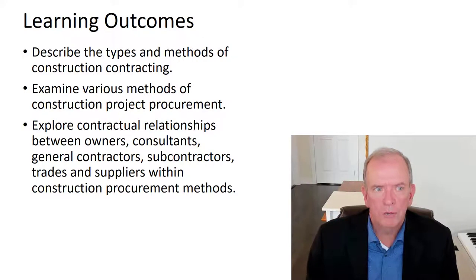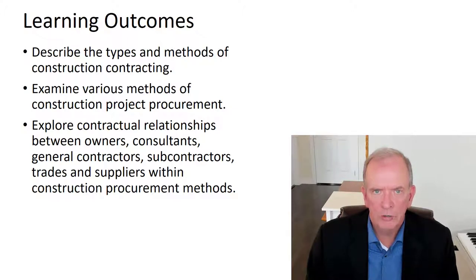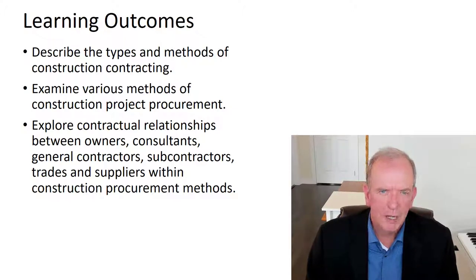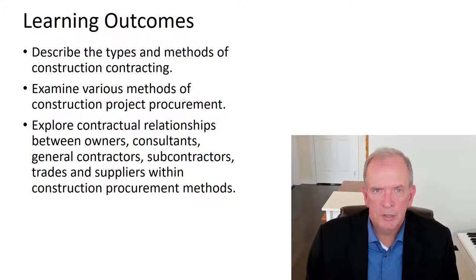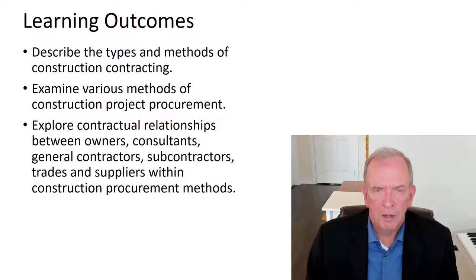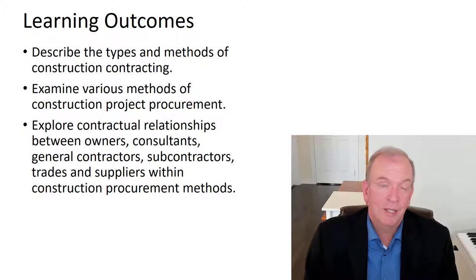Our learning outcomes for today — this lecture is broken up into two parts, 3A and 3B. We're going to be looking at the types and methods of construction contracting, how we go about procuring the work, and some of the elements of what we need in a typical construction contract — things we need to consider to ensure that the rights and responsibilities of the various parties involved are protected, and that various risks are assigned, and that we have clarity. If we have clarity and mutual understanding, there are a lot fewer opportunities for disputes and adversarial relationships to develop.